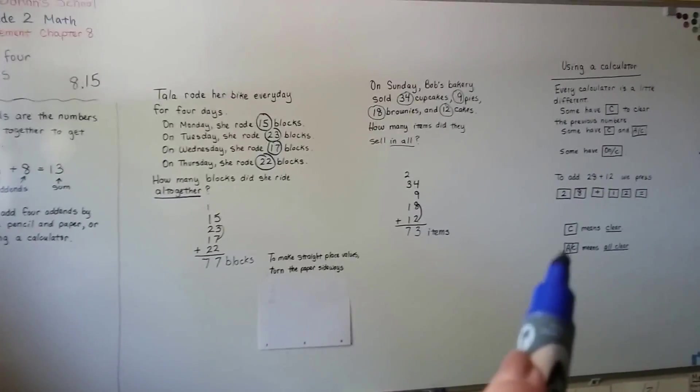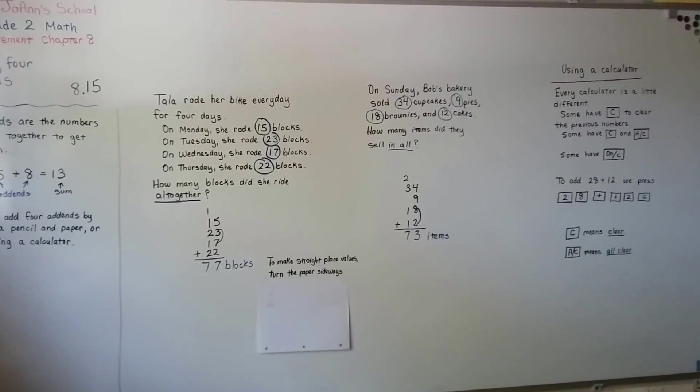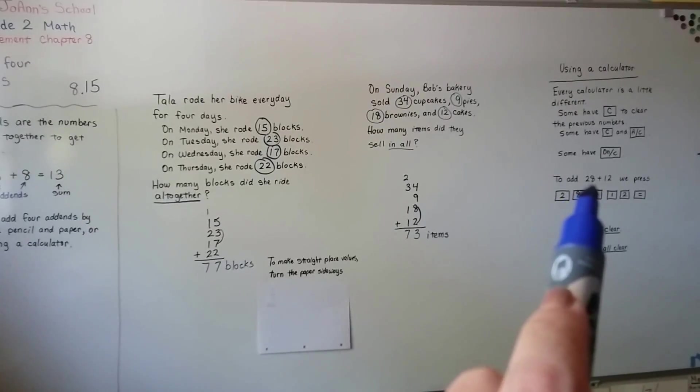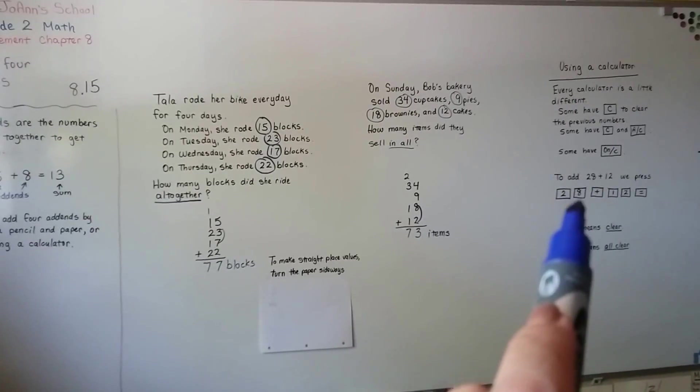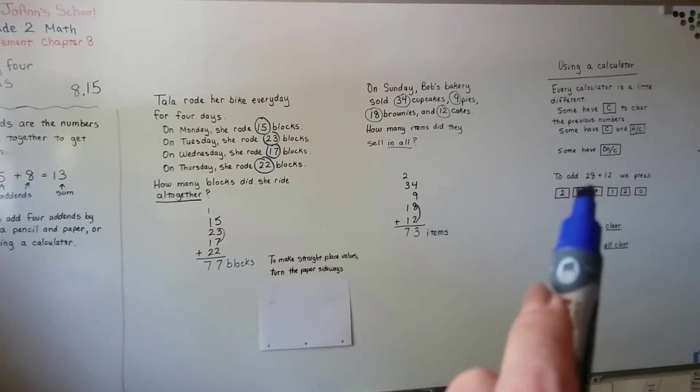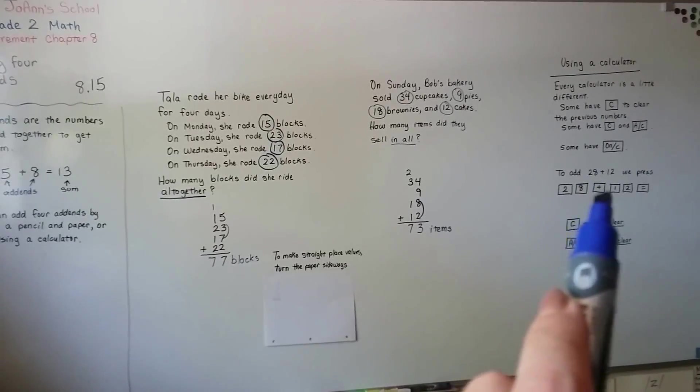And remember to hit the C or the AC button to clear out the previous numbers if you're going to use a calculator. And if you have two-digit numbers like a 28, you have to hit the 2 and then the 8 and then the plus sign.